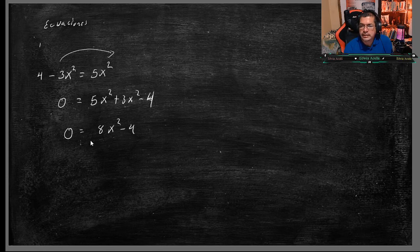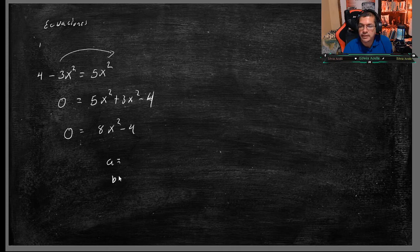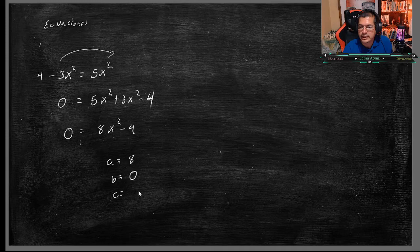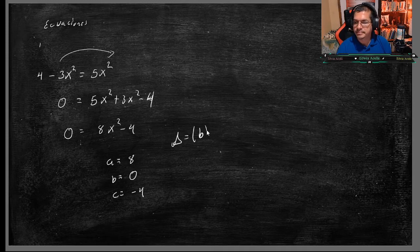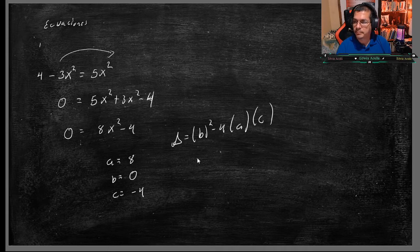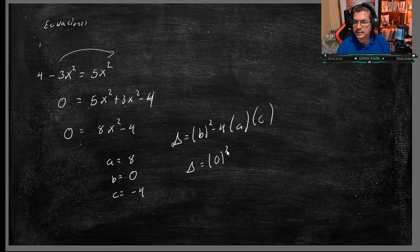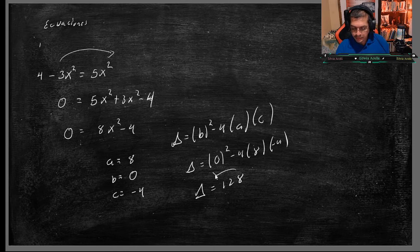También podemos sacar el discriminante. ¿Cuánto vale A? ¿Cuánto vale B? A sería 8. B en este caso no hay nadie, 0. ¿Y quién es C? Menos 4. Sacamos el discriminante. B a la 2, menos 4 por A, por C. Siempre pongan la forma para que se la aprenda. B a la 2 sería 0 a la 2, menos 4 por 8, por menos 4. Y eso quedaría 4 por 8, por 4, sería 128 positivo. ¿Cuántas soluciones tiene? 2.